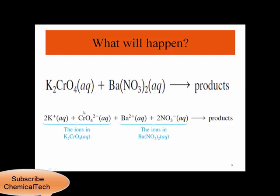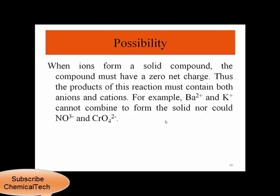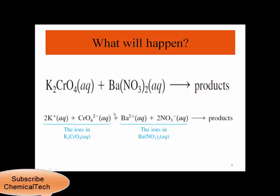We have potassium and chromate from one reactant and barium and nitrate from the other. So in our solution we have four different ions: two cations and two anions. When ions form a solid compound, the compound must have a zero net charge. Thus the product must contain both an anion and a cation. Two cations cannot form a solid and two anions cannot form a solid — for example, barium and potassium cannot combine, and nitrate and chromate cannot combine.